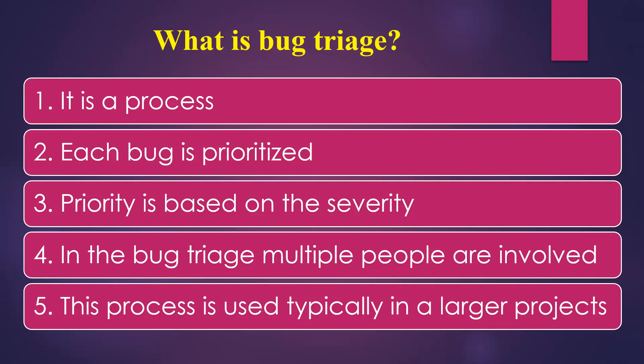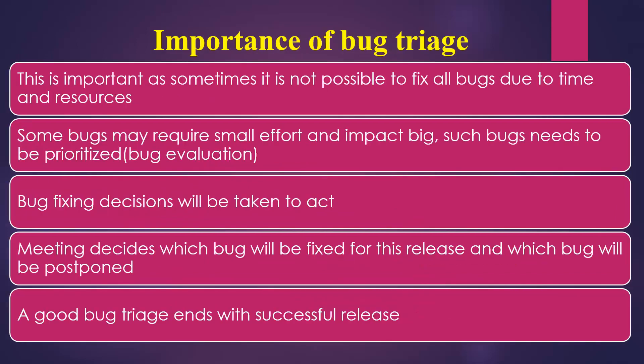In the same way, when it comes to software testing, whenever a major release or sprint review is happening, QA will find many bugs. We have to prioritize which bugs need to be resolved quickly — that is when bug triage comes in. Bug triage is a process wherein the team reviews all known bugs and each bug is prioritized based on its severity. Multiple people are involved, and this process is typically used in larger projects.